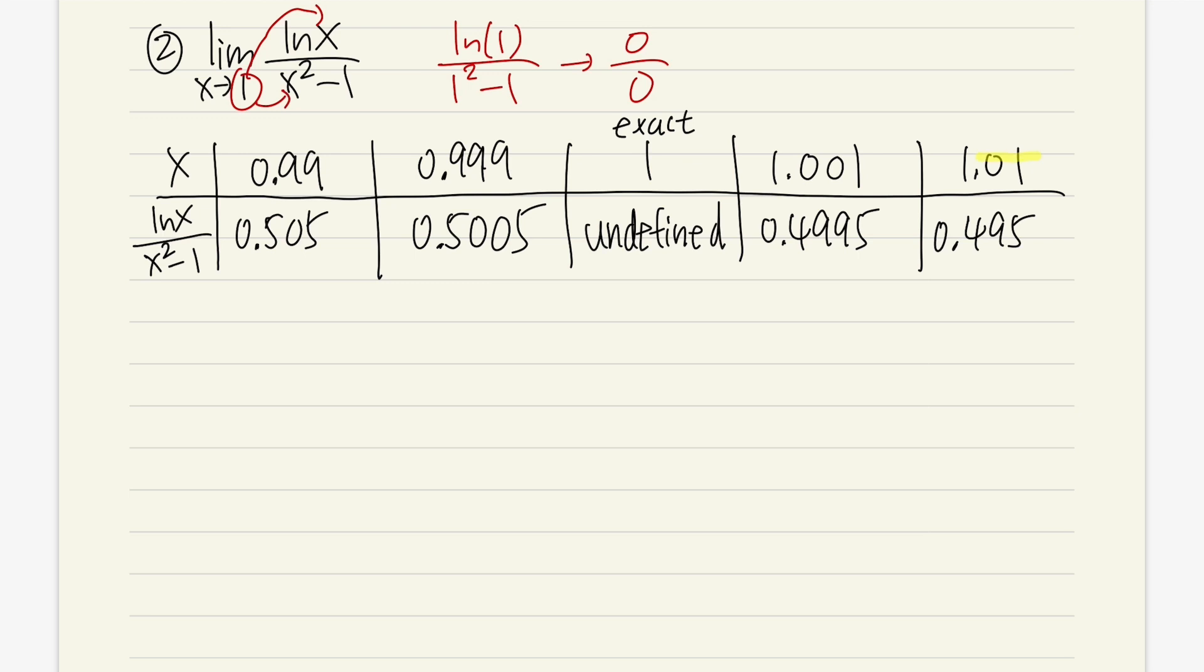So as we can see from the table, as x is approaching 1 from the right-hand side, the y is approaching 0.5. And when we approach 1 from the left-hand side, the y is approaching 0.5. Even though it was about 0.5, but it keeps going down, keeps going down, and it's approaching 0.5.